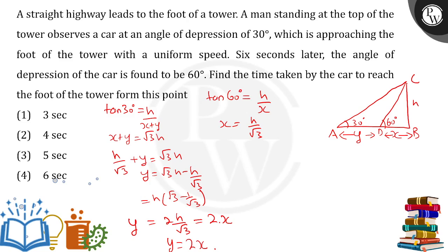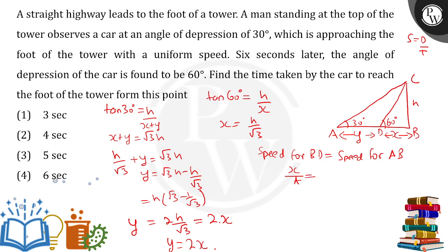Now, since the body is moving at uniform speed, the speed covering distance from D to B is the same as the speed covering A to B. Speed equals distance upon time. For segment BD, the distance is x and time is t, so speed = x upon t. For segment AB, the distance is x plus y and the time is 6 plus t, since the time from A to D is 6 seconds.